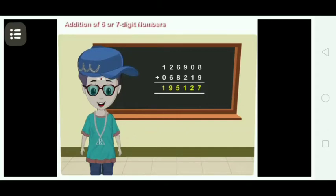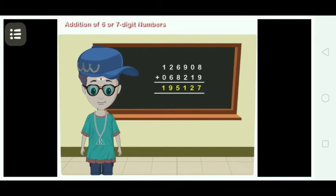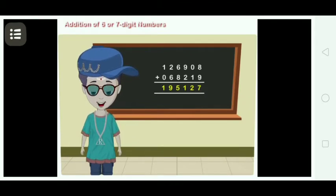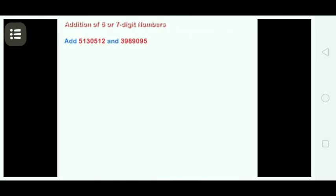Start with Addition. In our previous class, we have learned the addition of 4 or 5 digit numbers. In the same way, we add 6 or 7 digit numbers. Let us add 51,30,512 and 39,89,095.